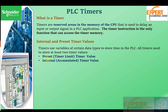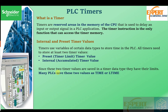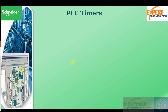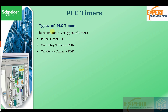Timers use variables of certain data types to store time in the PLC. All timers need to store at least two values: the preset or timer limit value, and the internal or accumulated timer value. Since these two values are saved in a timer data type, many PLCs save them as TIME or LONG TIME. However, the maximum and minimum preset and accumulated values depend on the data type of the timer variable and can change from one brand of PLC to another, or even between different series of the same brand. Check the programming guide for exact details.